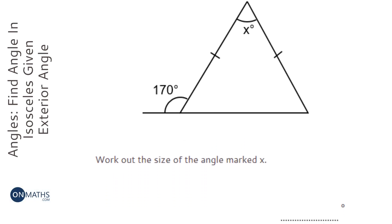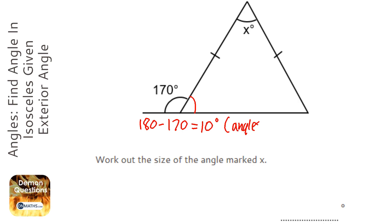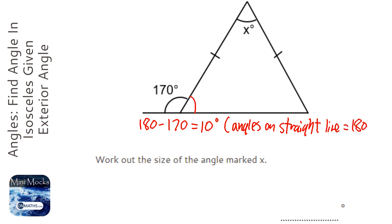There are quite a few bits we need to do for this question, and when you're doing this in the exam, make sure you show all the steps you're working out. The first angle I'm going to work out is this one, and to work out that one I'm going to do 180 take away 170, which equals 10 degrees. The reason is: angles on a straight line equal 180 degrees.